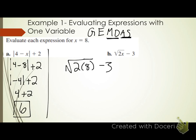Grouping symbols — I like to count the square root as a grouping symbol if I have operations going on underneath it. I've got multiplication, so let's simplify everything in the square root first. What's 2 times 8? Sixteen. And then we simplify the square root. What is the square root of 16? Square root means: what number times itself gives me that number? Four times itself gives me 16, so the square root of 16 is 4.